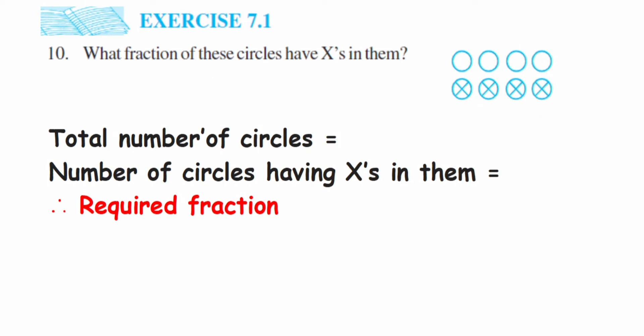3, 4, 5, 6, 7, 8. So total number of circles is 8. In that, how many circles have X in them? You can see there are 1, 2, 3, 4 circles with X.